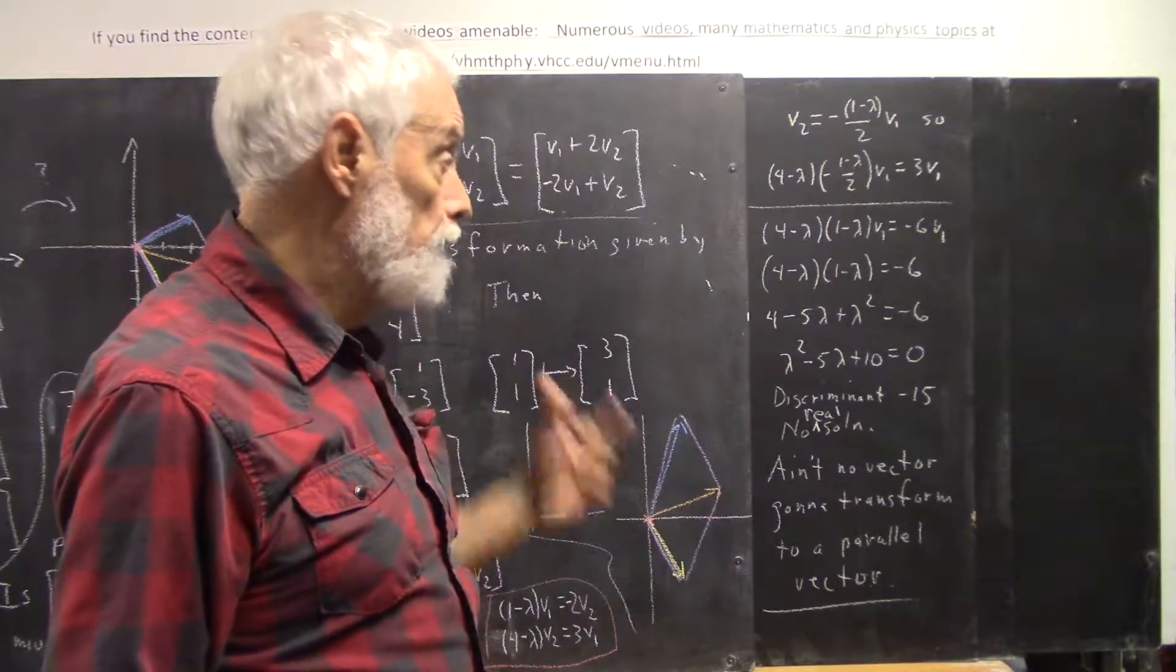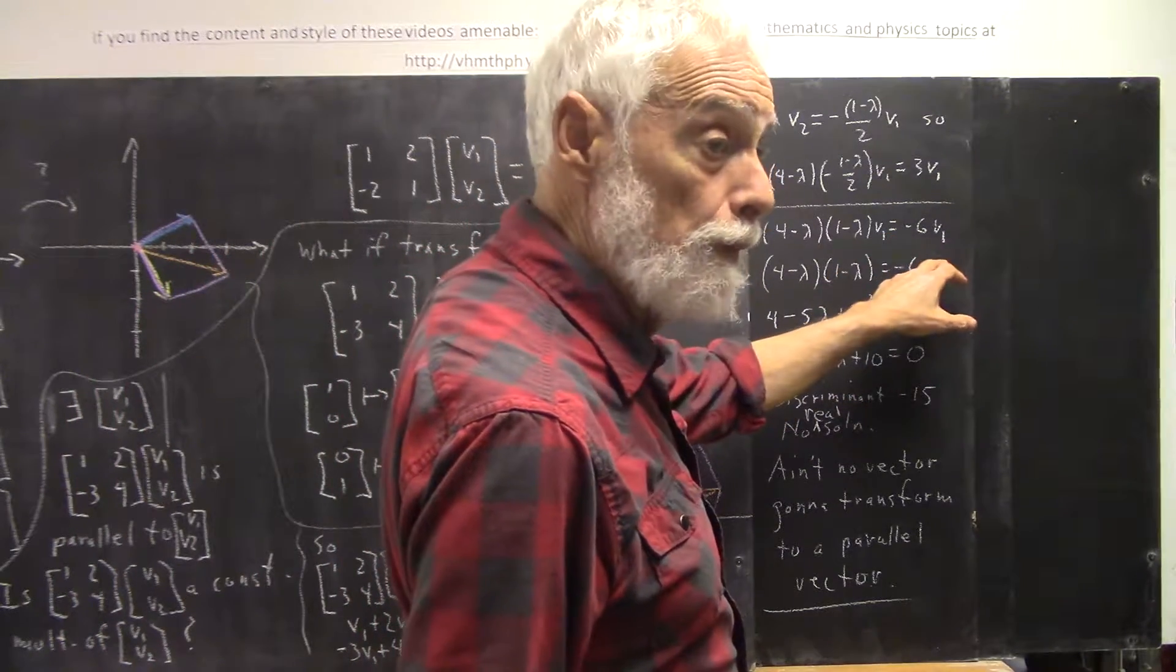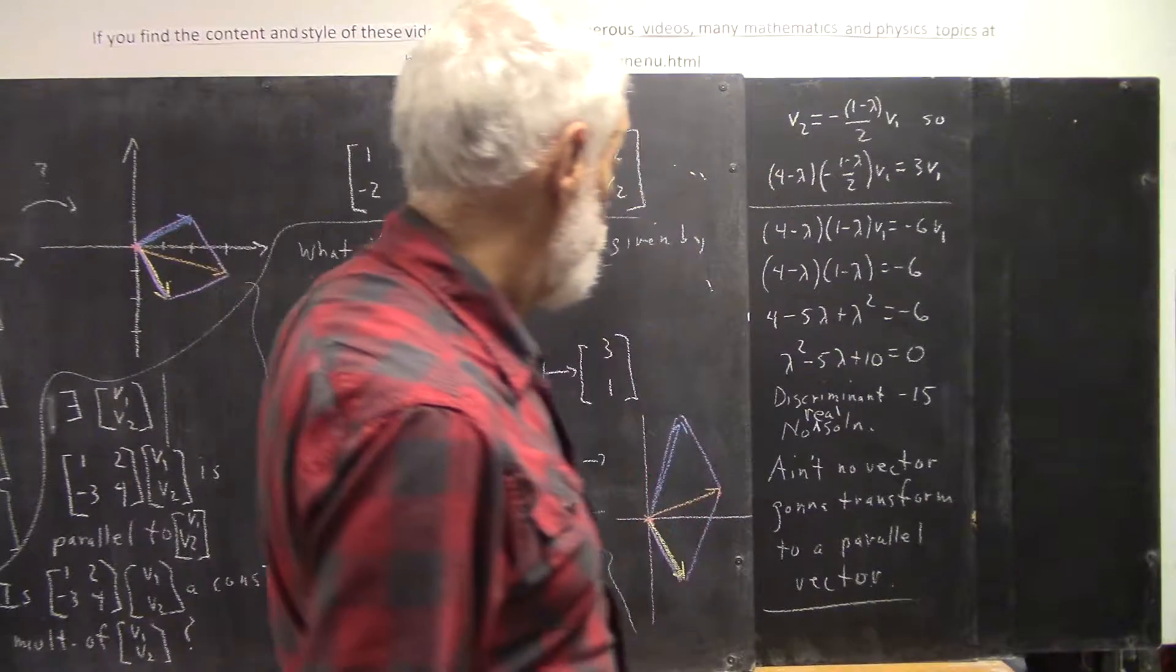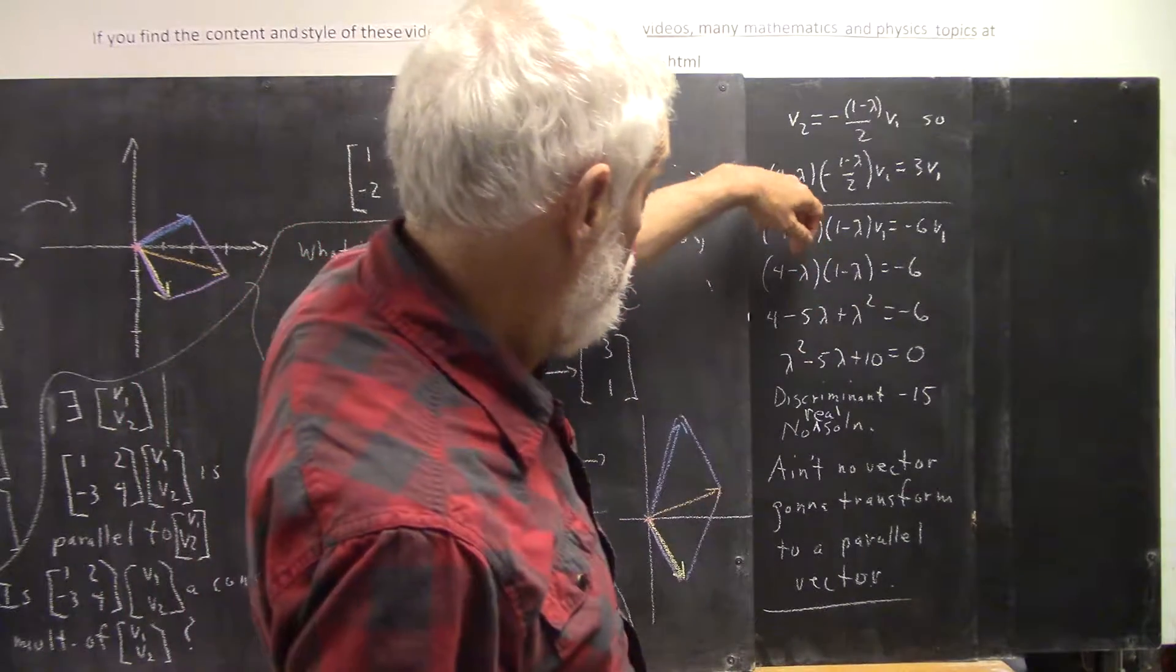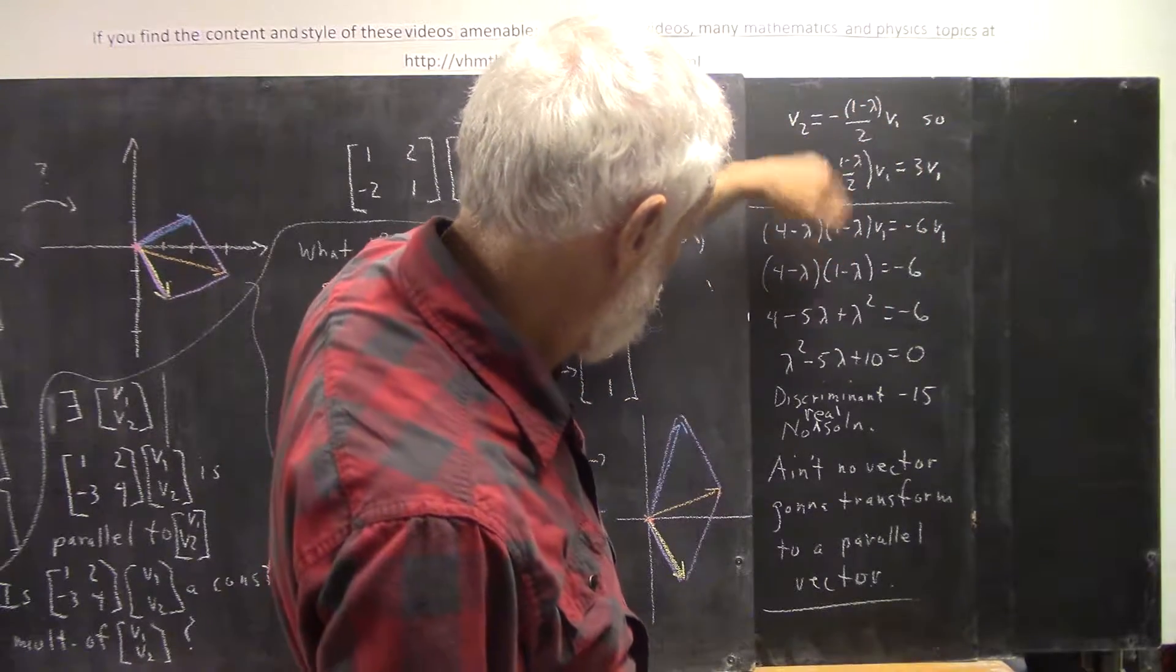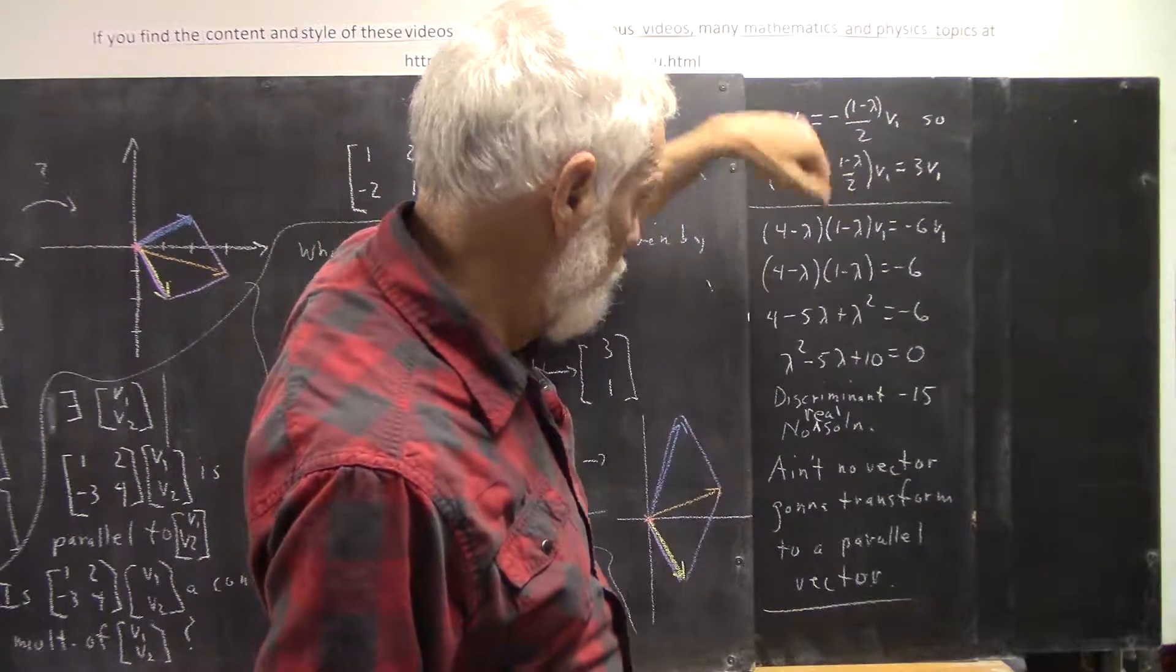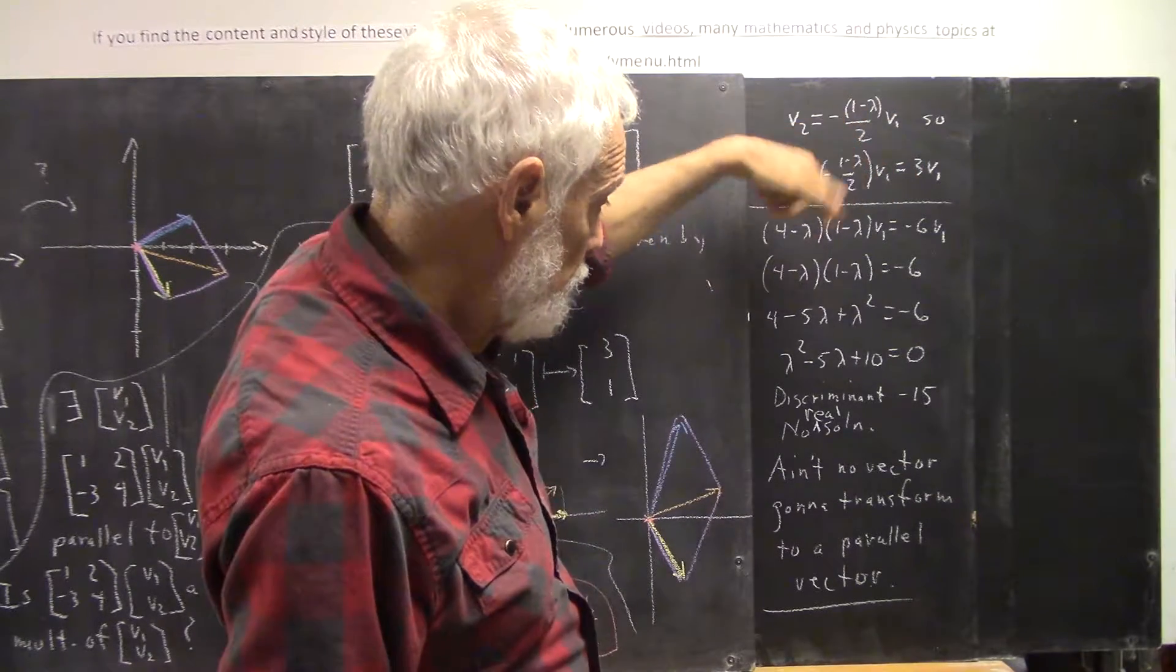If we're going to get a solution, this equation has to be true, and then it's going to be true for any value of v1, except 0, because we divided by v1. We can't divide by 0, so v1 couldn't be 0. That wouldn't be a useful solution.